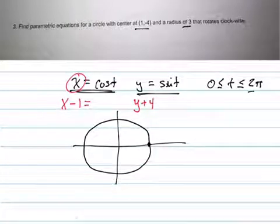The second thing is we don't want the radius to be 1. We want the radius to be 3, so we write 3 in front of the cosine and 3 in front of the sine also.